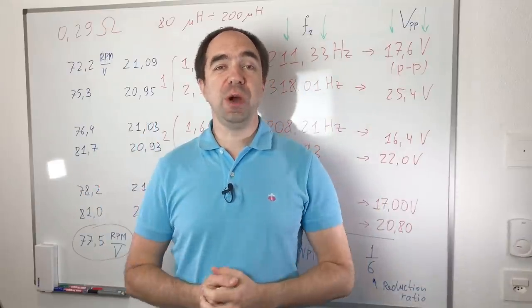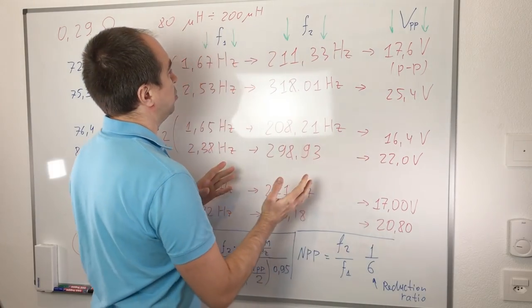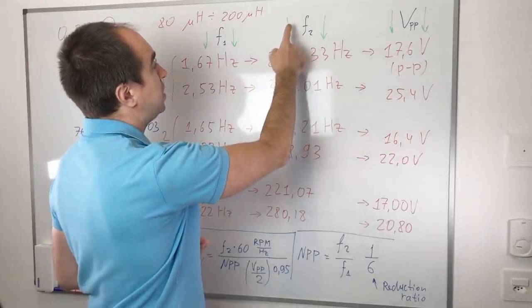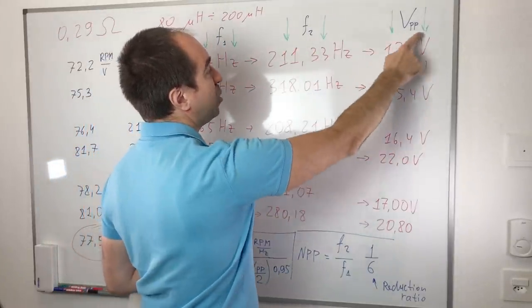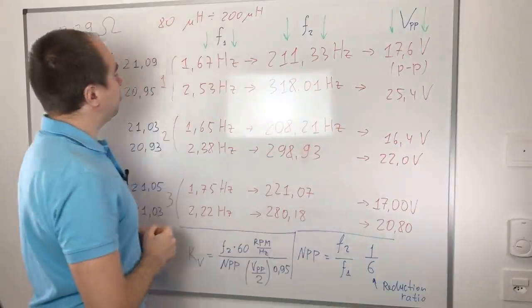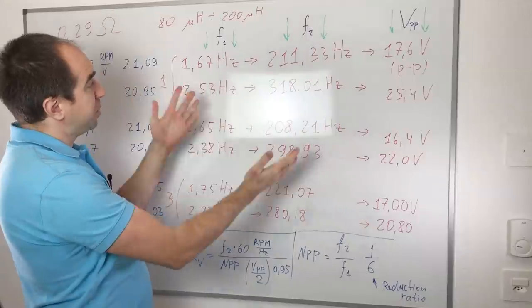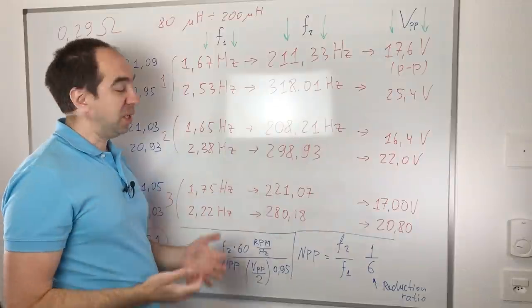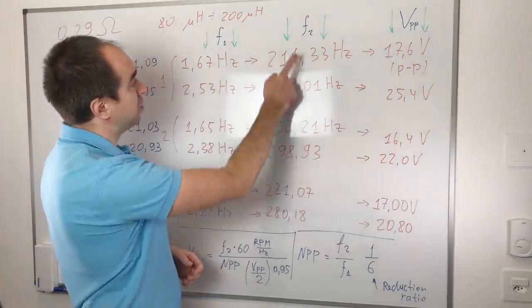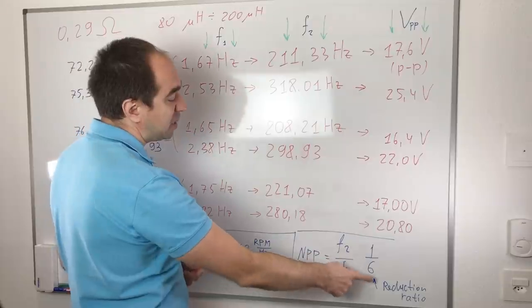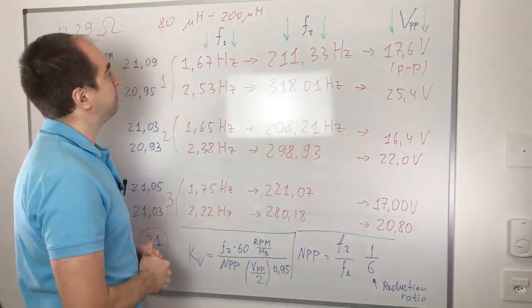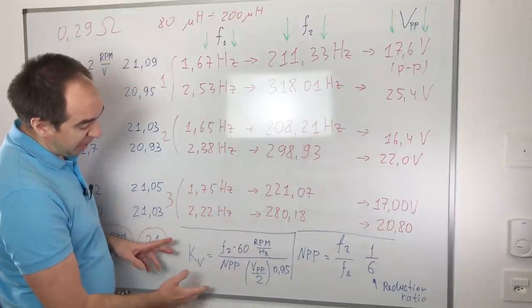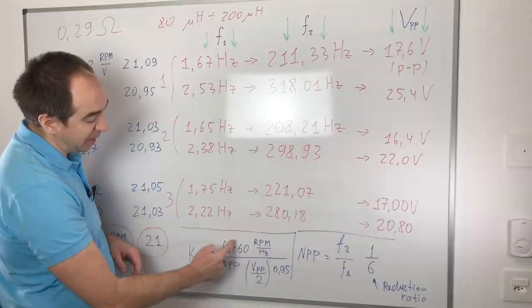With our overengineered device we measured these values. We measured the frequency of the rotation of the output shaft, the frequency of the signal from one of the coils, and the voltage peak to peak from this coil. And we did this for three coils. From this data we can get the number of pole pairs of this motor. This is quite easy. We need to take frequency 2, this one, divided by frequency 1, and divided by the reduction ratio. And in order to calculate the KV rating we can use this formula.